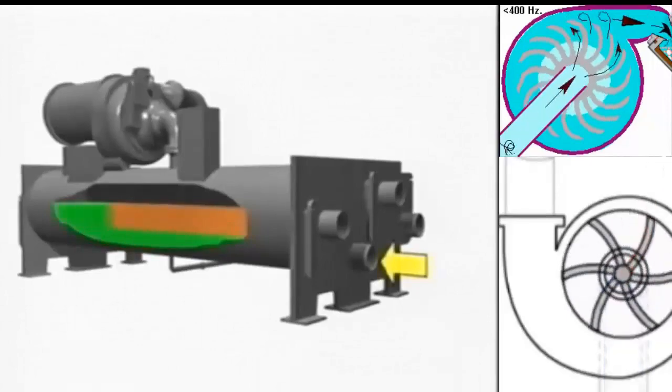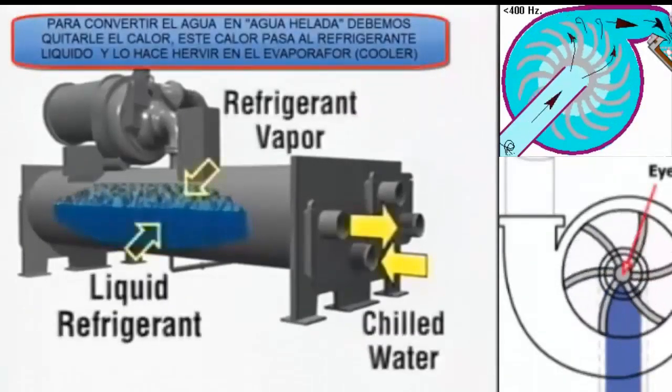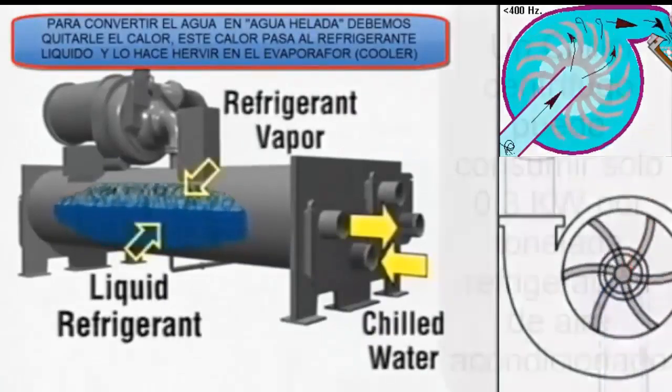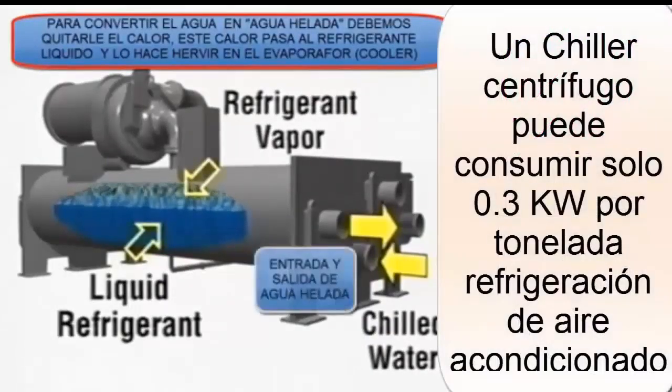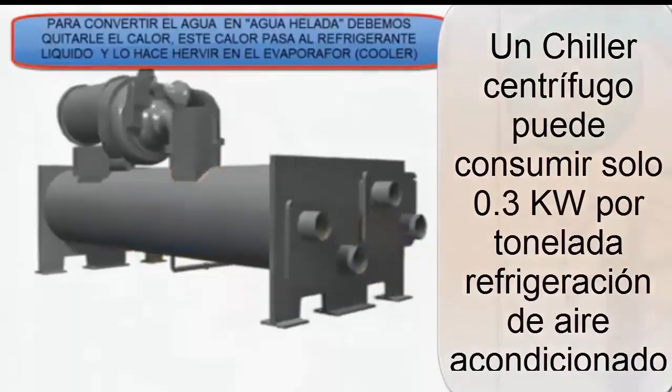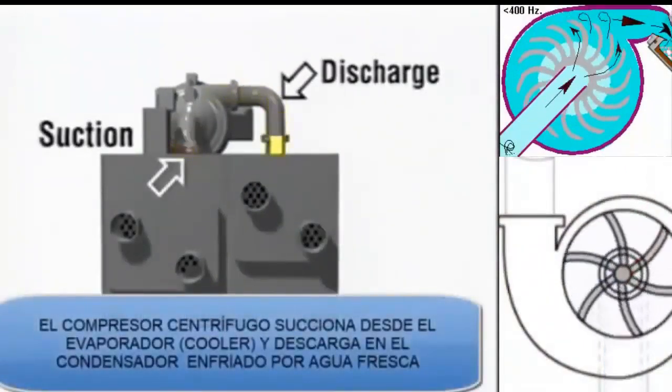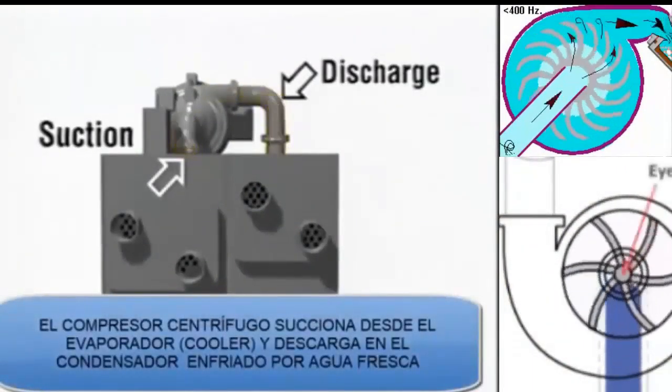The chillers with centrifugal compressor are chillers that acquire a very high efficiency. We are going to relate from 0.3 kilowatts for each ton of refrigeration. We are going to consume half of what a conventional air conditioner consumes, one of those that already come with high efficiencies, with inverter equipment, it can even achieve half of that consumption. That is why large air conditioning plants are looking for the chiller with centrifugal compressor.